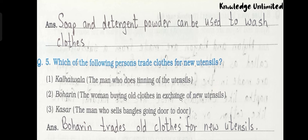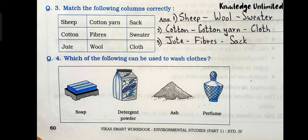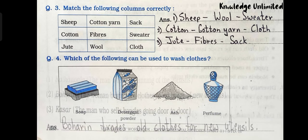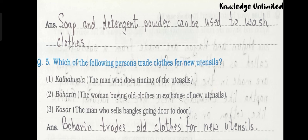Question number four: which of the following can be used to wash clothes? The answer is soap and detergent powder can be used to wash clothes. Then question number five: which of the following persons trades clothes for new utensils? The answer is boharin trades old clothes for new utensils.